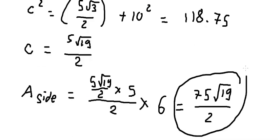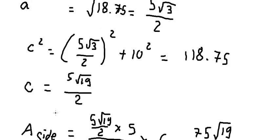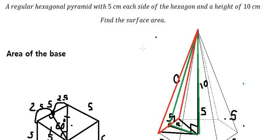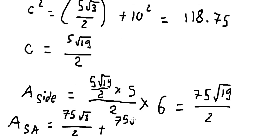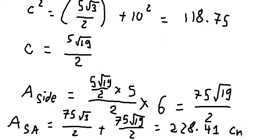Now we have the total surface area: the base area 75√3/2 plus the lateral area 75√19/2 equals approximately 228.41 square centimeters. This is the final answer. Thank you for watching.